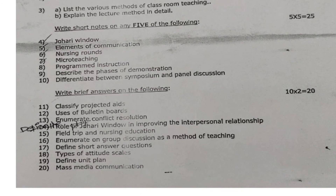Write short notes on any 5 of the following. Questions 4 through 10 are short notes — that is 7 questions. Out of those 7 questions you have to answer 5 questions. Each question carries 5 marks, so 5 into 5 equals 25 marks.